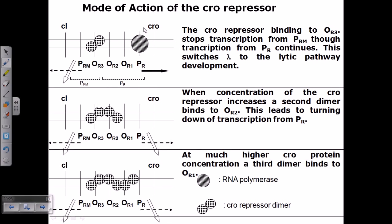Let's talk about the lytic cycle and how it proceeds. The mode of action of the Cro repressor is very important in controlling the lytic cycle. Looking at this picture, the Cro repressor binds to the operator ORC. There are three operators in the right region: OR1, OR2, and OR3. The Cro repressor is active only when Cro is in the dimer form, and this is the RNA polymerase designated here. The Cro dimer binds to ORC and stops transcription from PRM, while transcription from PR continues.